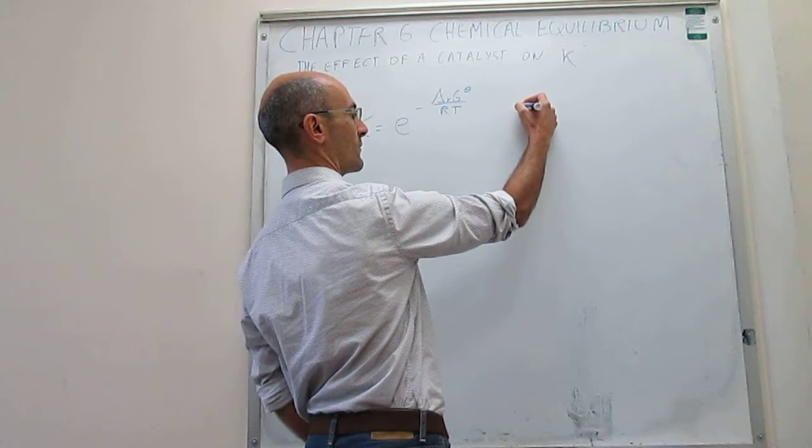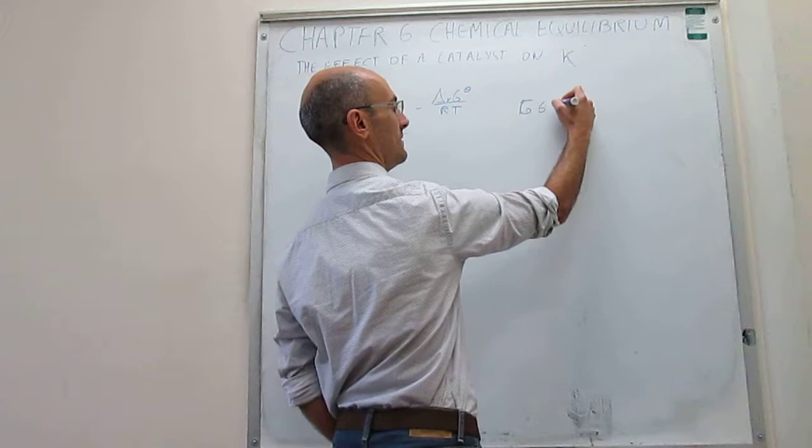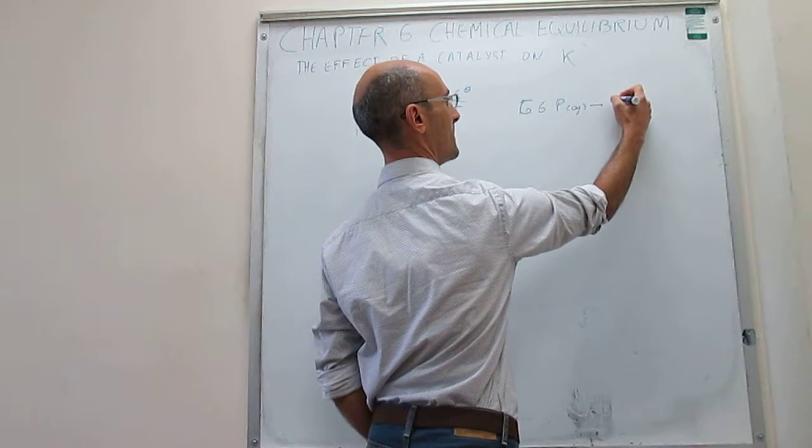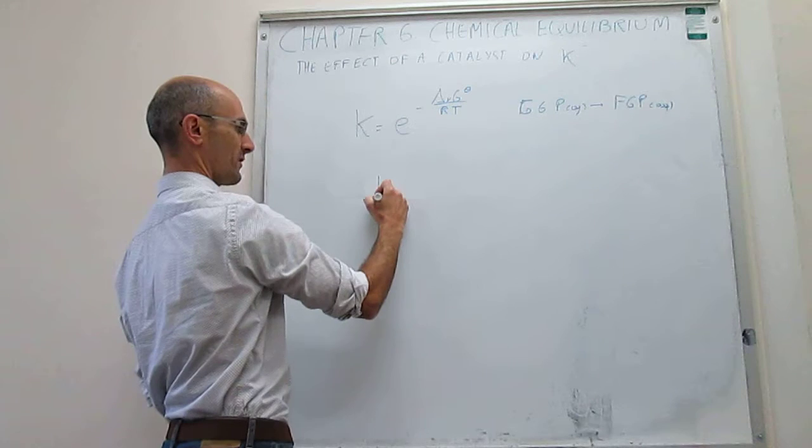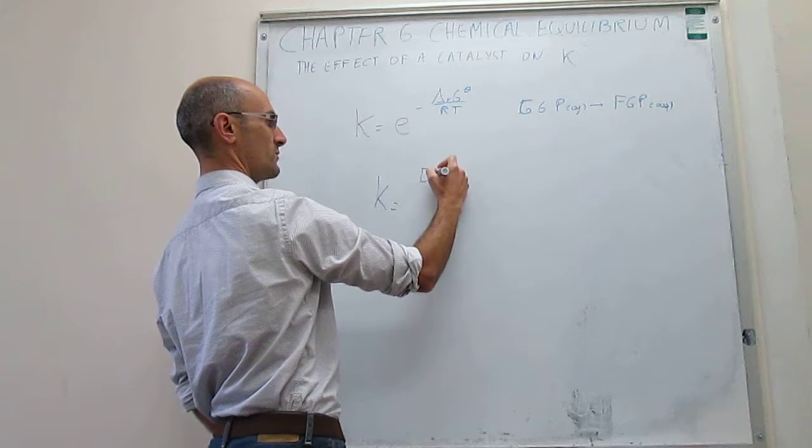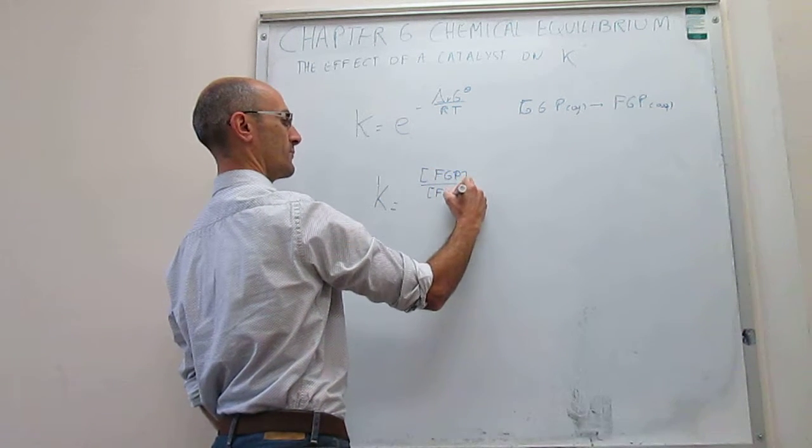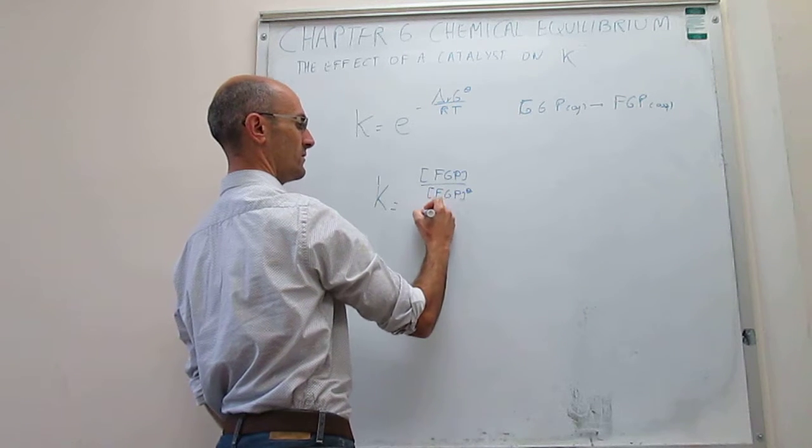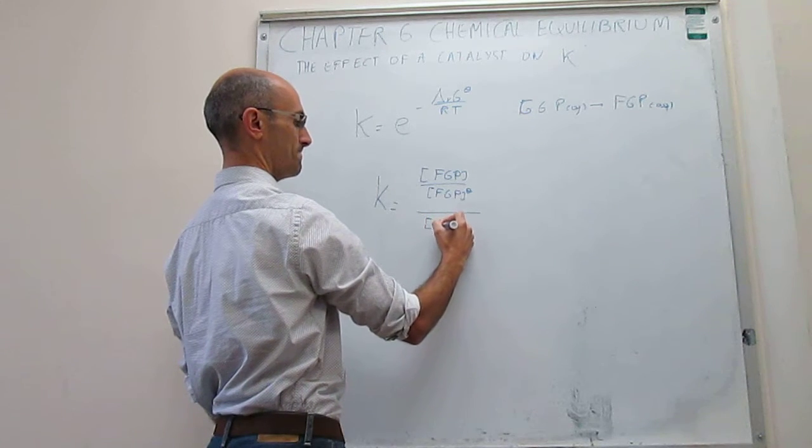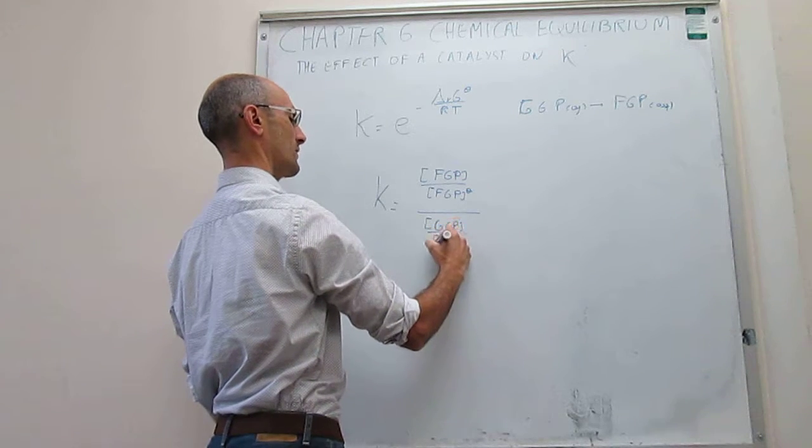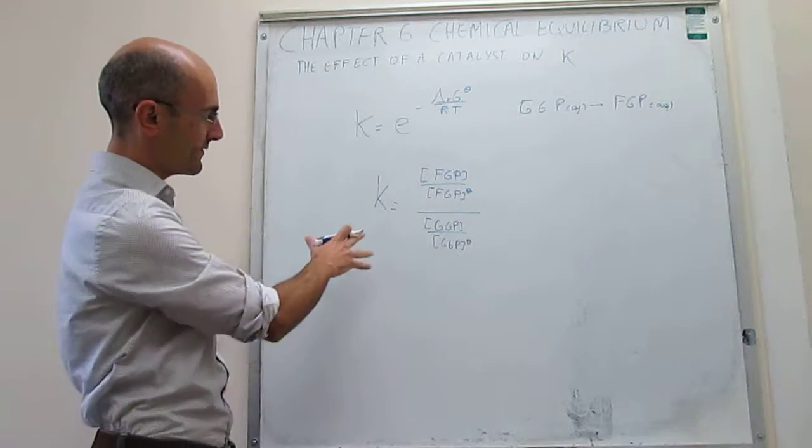Let's think about a very simple chemical reaction. We could do A to B, or we can use glucose-6-phosphate in aqueous solution to fructose-6-phosphate in aqueous solution. Then we can write the equilibrium constant simply as the following: the molar concentration of products, fructose-6-phosphate over the concentration of products at standard state, which is 1 molar, over the concentration of reagents, glucose-6-phosphate, over the concentration of reagents at standard state, which will be 1 molar. So that is the value of the equilibrium constant.